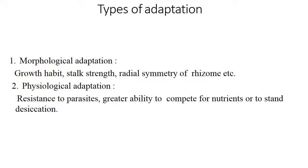Types of adaptation — two types: morphological and physiological. Morphological adaptation includes growth habit, stock strength, radial symmetry of rhizomes, etc. Whereas physiological adaptation includes resistance to parasites, greater ability to compete for nutrients or to withstand desiccation.